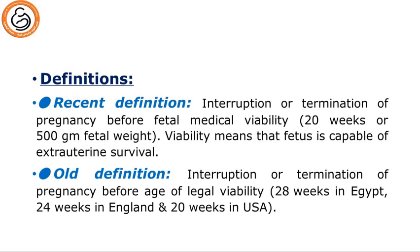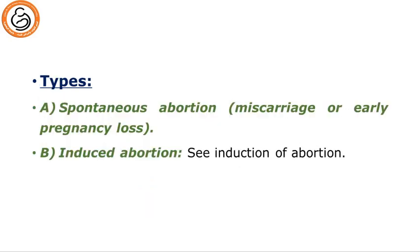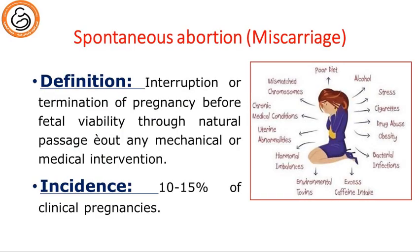Legal viability was 20 weeks in USA. Regarding types, we have spontaneous abortion, which is now called miscarriage or early pregnancy loss, or induced abortion. Starting with spontaneous abortion or miscarriage: by definition it means interruption or termination of pregnancy before fetal viability through natural passage without any mechanical or medical intervention. This accounts for 10 to 15 percent of all clinical pregnancies.